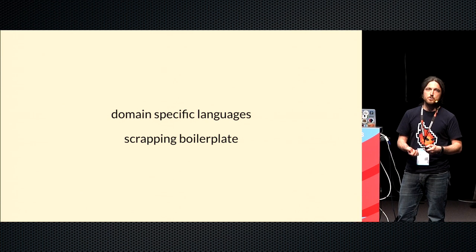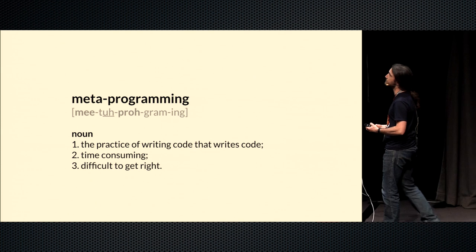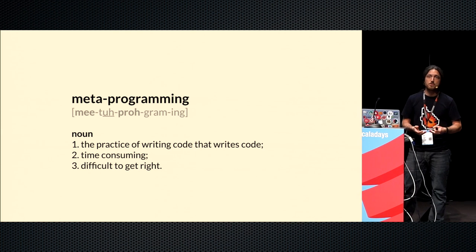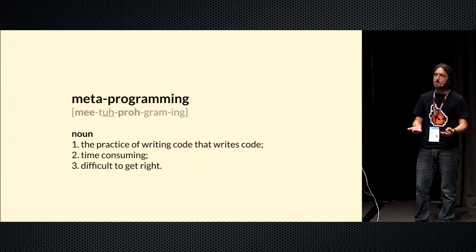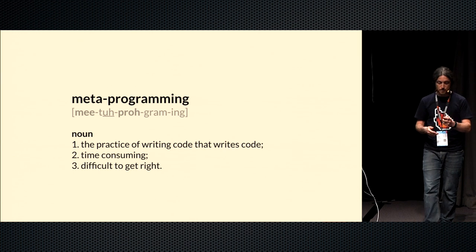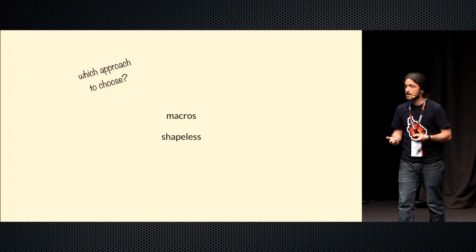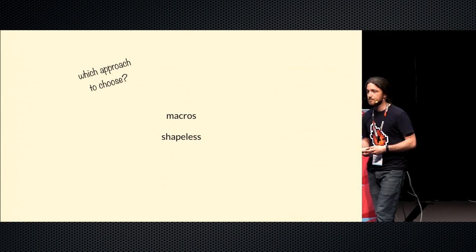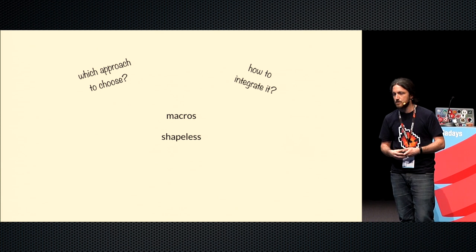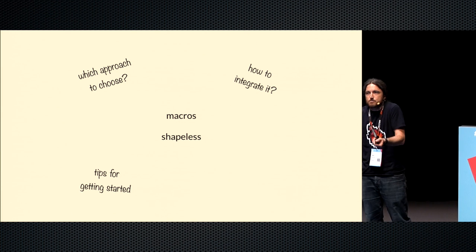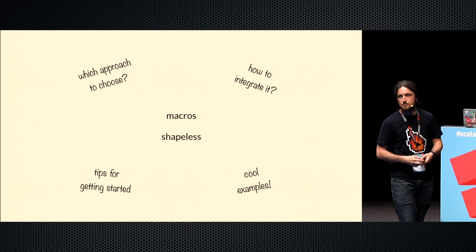The reason I'm giving a talk about metaprogramming is that it can also be quite difficult to get right. There are various different approaches to metaprogramming in Scala. They're suitable for different tasks, and if we choose the wrong approach for the wrong task, we can spend more time getting things to work than we otherwise would. So we're going to talk about two things: macros and Shapeless. We'll cover which to choose for a given problem, how to integrate it neatly into our code, how to get started, and how to design our code — all through the medium of a couple of examples.